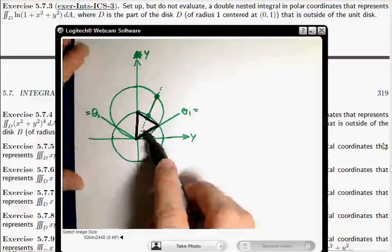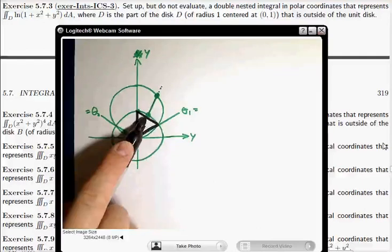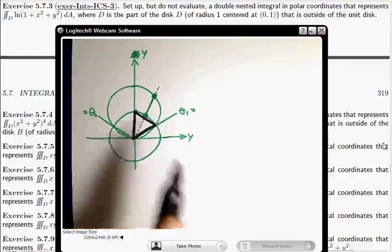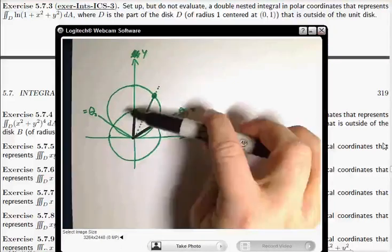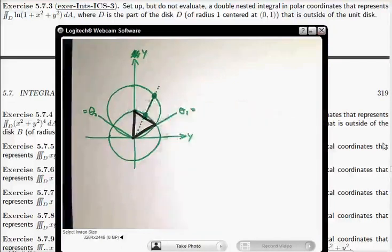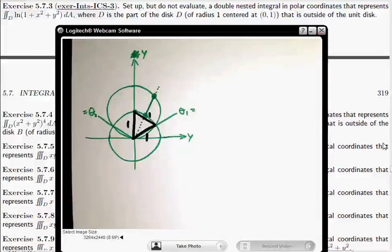That because the radius of this other disk is one. And that because the center of the other disk is at (0,1). So all three of these are one, which means that this is an equilateral triangle.